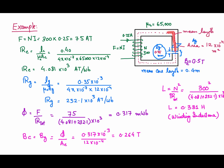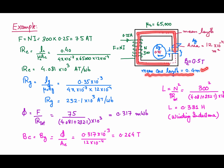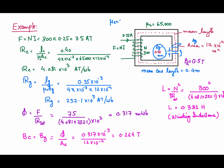Now calculating the core reluctance: the mean core length is given as 0.4 m (with 0.5 m at the central part). Using R_core = l/(μ₀ × μᵣ × A), substituting μ₀, μᵣ = 65,000, and the cross-sectional area, the reluctance of the core is 4.081×10³ ampere-turns per weber.